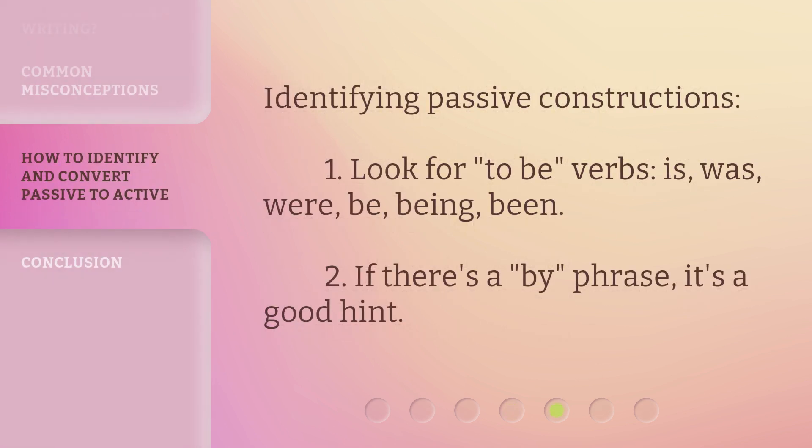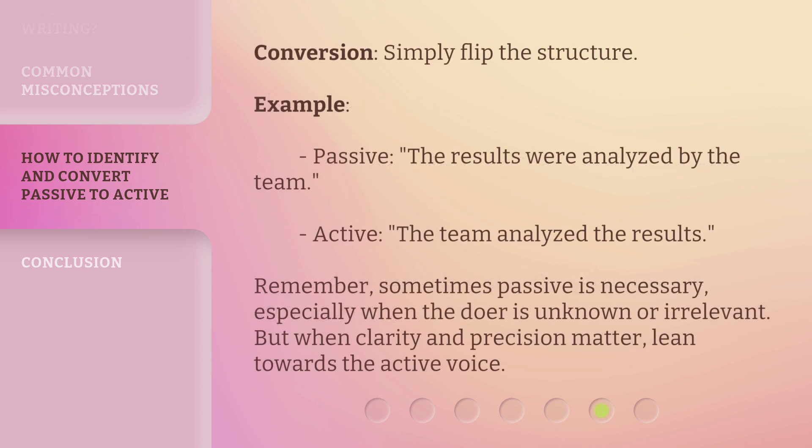Identifying passive constructions: 1. Look for 'to be' verbs — is, was, were, be, being, been. 2. If there's a 'by' phrase, it's a good hint. 3. Conversion — simply flip the structure. Example — Passive: 'The results were analyzed by the team.' Active: 'The team analyzed the results.'